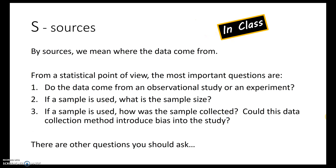Whenever you're presented with information, start with the source — where is that data coming from? From a statistical point of view, the most important questions are: do the data come from an observational study or an experiment? We saw at the beginning of this course that observational studies usually cannot claim causation. If a sample was used, what was the sample size, and how was it collected? Was there a bias? If we don't have a good source, the conclusions we reach may not be reasonable.